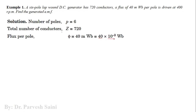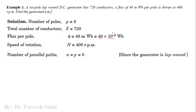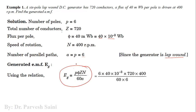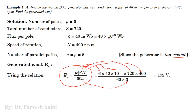So: number of poles P = 6, number of conductors Z = 720, flux per pole phi = 40 milliweber = 40 × 10⁻³ weber, speed N = 400 rpm, and number of parallel paths A = 6 for lap wound. Putting all parameters into Eg = (P × phi × Z × N) / (60 × A).